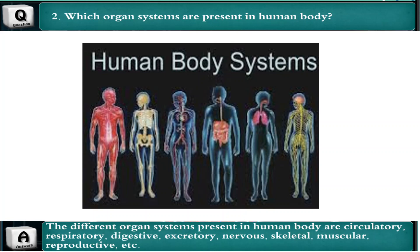The different organ systems present in the human body are muscular system, skeletal system, circulatory system, digestive system, respiratory system, nervous system, etc.